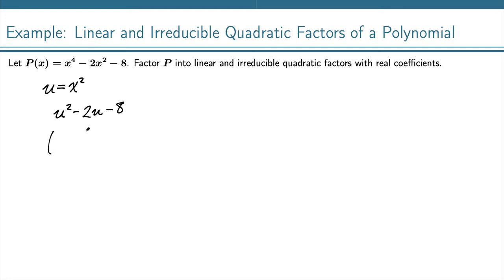So this factors as u minus 4 times u plus 2. Now we can go back and replace the u with x squared. So we have x squared minus 4 times x squared plus 2.